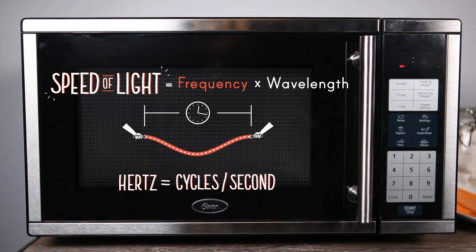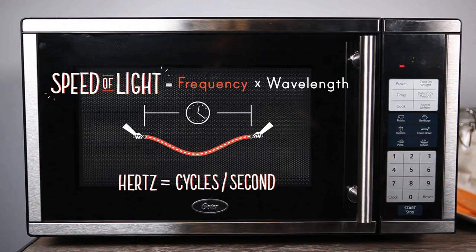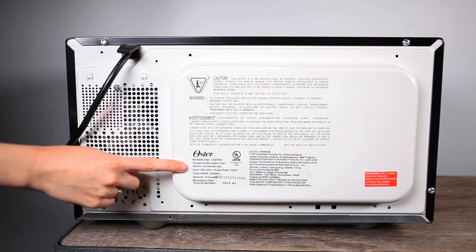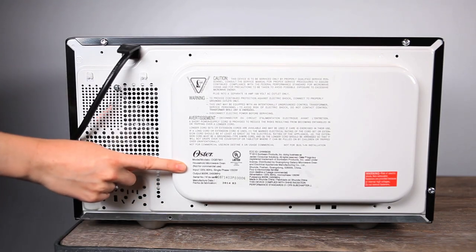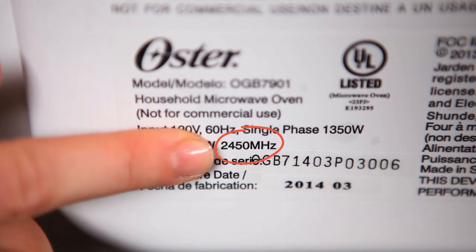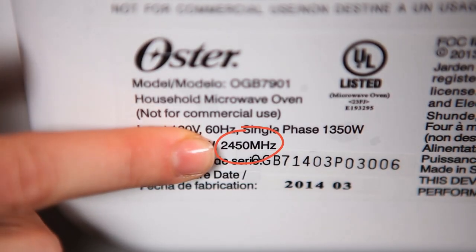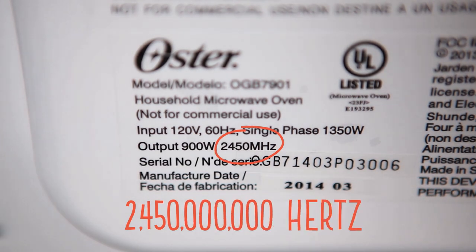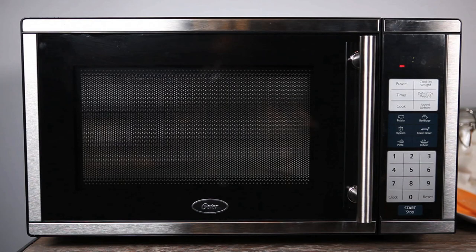Finding the frequency is the easy part — it's usually listed on the label on the side or the back of your microwave. Ours is 2,450 megahertz, or 2 billion 450 million Hertz.